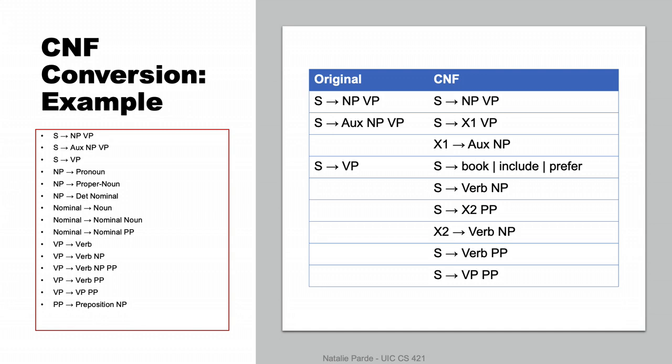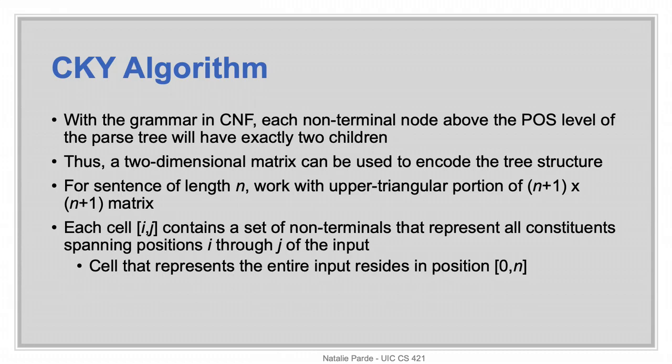This means that if we had an original context-free grammar like the one you see on the left here, you can convert its first three production rules to something like what you see on the right. Once we have our grammar in Chomsky Normal Form, we can be assured that every non-terminal node in our parse tree, until we get to the point where we're assigning part-of-speech tags, will have exactly two children. This means that we can encode our tree using a two-dimensional matrix, and we'll only be concerned with the upper triangular part.